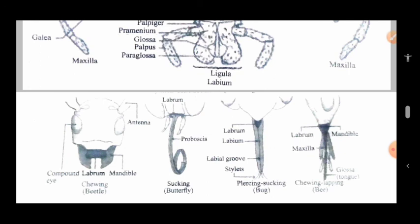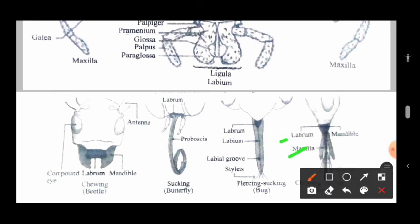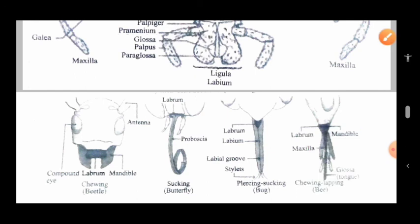The chewing-lapping type is present in the honey bee. It also has the glossa, maxilla, labrum, and mandibles. These parts take part in the grinding of food material, engulfing the food material, and then passing it to the body.